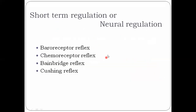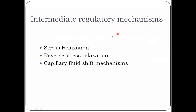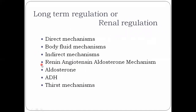The reflexes under short-term regulation are: baroreceptor reflex, chemoreceptor reflex, Bainbridge reflex, and Cushing reflex. Short-term regulation is also known as neural regulation, as it involves nerves. Intermediate regulatory mechanisms include stress relaxation, reverse stress relaxation, and capillary fluid shift. Long-term regulation includes direct mechanisms, body fluid mechanisms, indirect mechanisms, and renin-angiotensin-aldosterone mechanisms. Long-term regulation is also known as renal regulation, as it mainly involves the kidney.